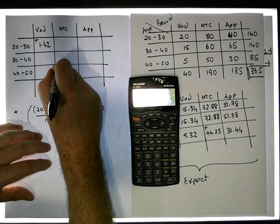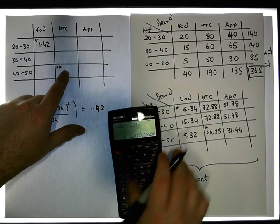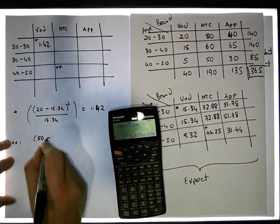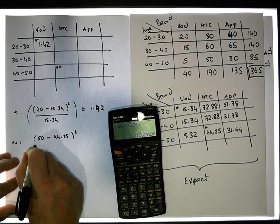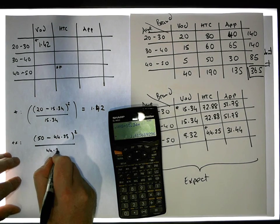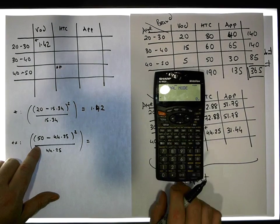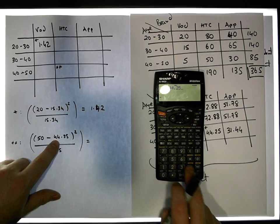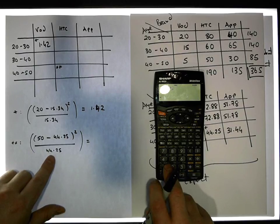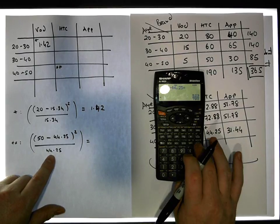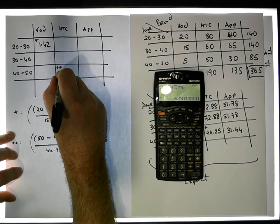Now cell double-star: the observed is 50, and what we'd expect for this cell is 44.25. So it's (50 minus 44.25) squared, divided by 44.25. That's 50 minus 44.25 = 5.75; squared; divided by 44.25, giving us a value of 0.75.